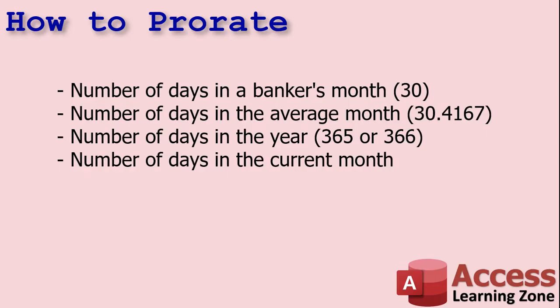There are four different ways to calculate prorated rent. The first is the banker's month — 30 days. If someone is moving in on the 20th, they pay 10 days worth of rent: take the rent, divide it by 30, multiply by 10. It's the simplest way. The next way is to use the number of days in the average month — 365 divided by 12 gives you 30.4167, or 30.42 as commonly used.